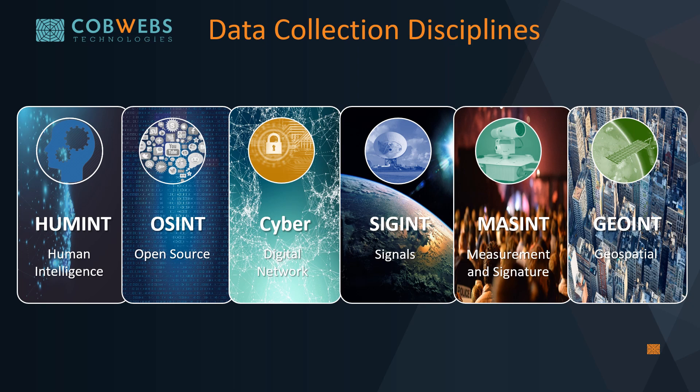The first one is human intelligence, which is the collection of information from human sources such as interviewing witnesses or suspects. Open source intelligence refers to a broad array of information and sources that are generally available, including information obtained from the media such as newspapers, radio, television, etc. In other words, anything available to the public.